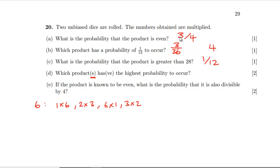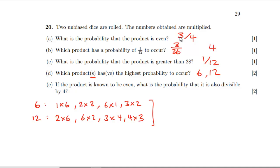Eight only gives two times four and four times two. Twelve can be made as two times six, six times two, three times four, and four times three — also four permutations. Going higher, like 18, reduces the count because you'd only have six times three. So the answer is going to be six and twelve. I don't know a more elegant method than stepping through the combinations.